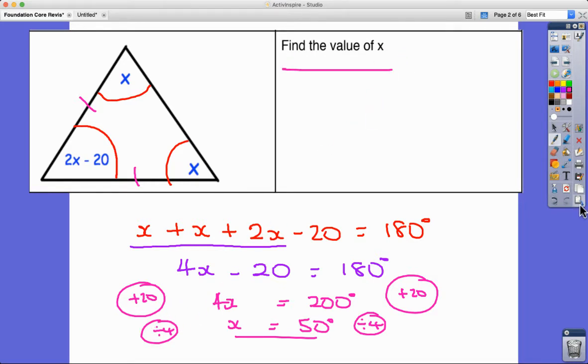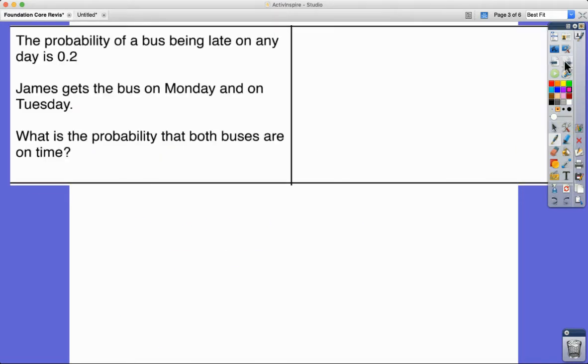We've answered the question, we've found the value of x. Next question, this is a good one. The probability of a bus being late on any day is 0.2. James gets the bus on Monday and Tuesday. What is the probability that both buses are on time? We have a nice strategy for doing this. As soon as you see sort of two events like Monday or Tuesday, or if it's a bag of marbles, pick one pick two, it's a classic tree diagram question.